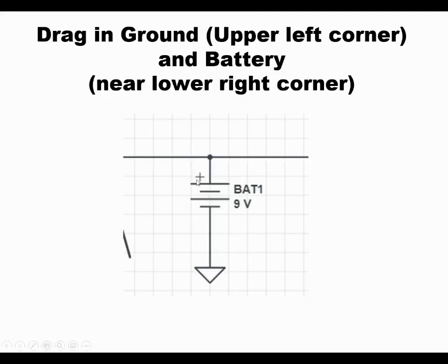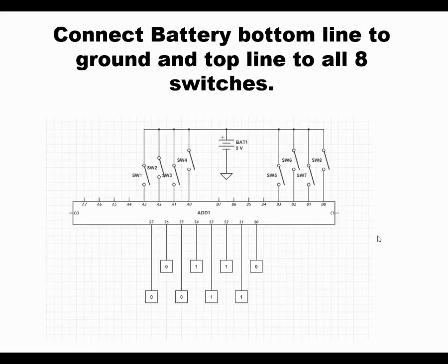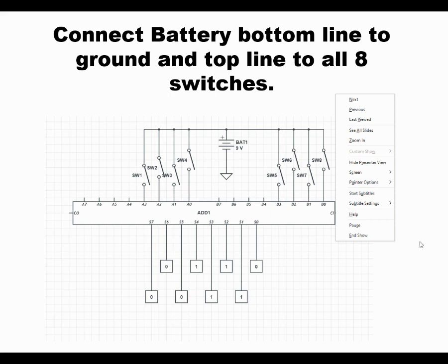Next thing you want to do is drag in a battery and a ground, which they're shown right here. Battery is toward the lower right. The ground is the absolute top upper left. Once you got all this stuff in, connect it all up like shown here. And you'll notice the bottom is no longer all zeros.